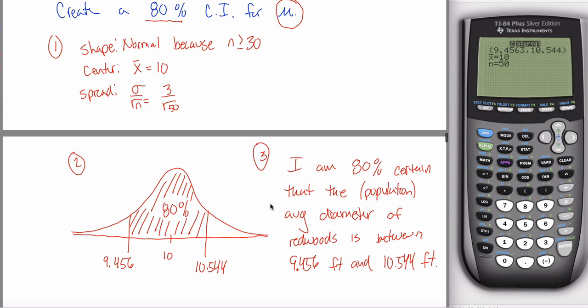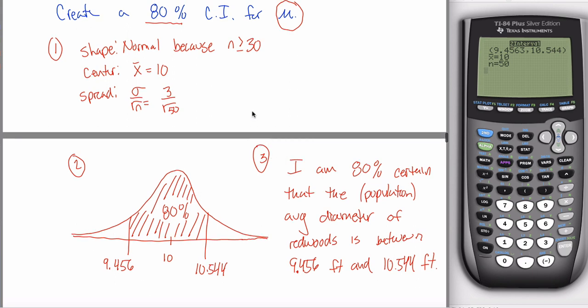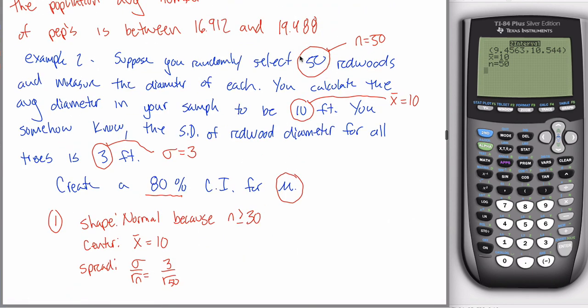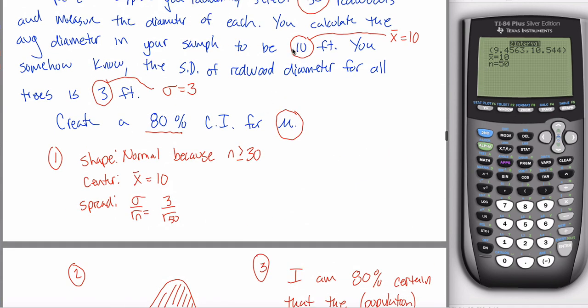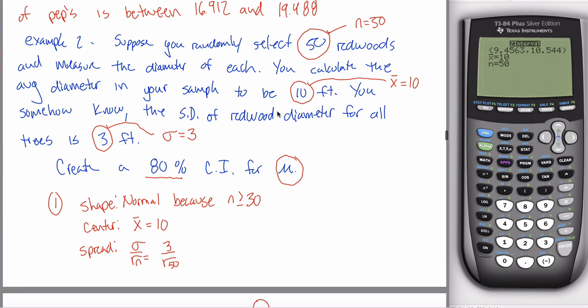Before I end this video, I just want to make a quick comment here. We only looked at 50 trees. This is the power of statistics. We only looked at 50 trees, that's not that many. And we're making a conclusion about millions of trees, however many redwoods there are. And it's a pretty good conclusion. I'm 80% sure that the diameter is between these two numbers. Just based on the 50 trees that I looked at. It's pretty good. That's what you do with statistics.